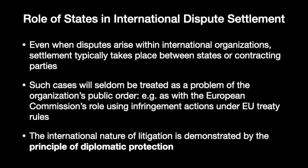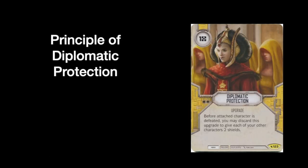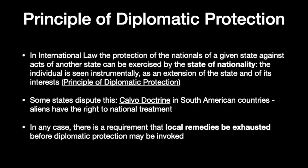Moving to the principle of diplomatic protection: in international law, the protection of a state's nationals against acts of another state is typically exercised by the state of nationality. The individual is seen as an extension of the state and its interests. Some states dispute this — the Calvo doctrine in South American countries holds that aliens only have the right to national treatment. So a foreigner is not automatically entitled to shift the case to his state of nationality; they must go through national courts the same way as domestic investors in an investment dispute.